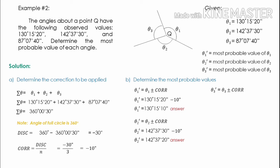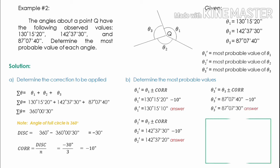Lastly, θ3 prime is the most probable value of θ3. θ3 prime equals θ3 plus or minus the correction. Since the correction is negative, we subtract: 87 degrees 7 minutes 40 seconds minus the correction of 10 seconds gives us 87 degrees 7 minutes and 30 seconds — the most probable value of θ3.